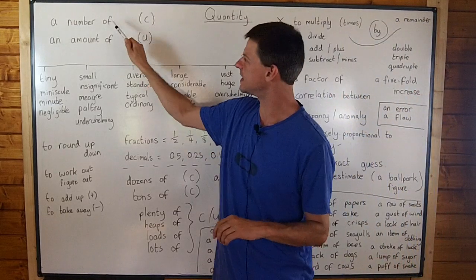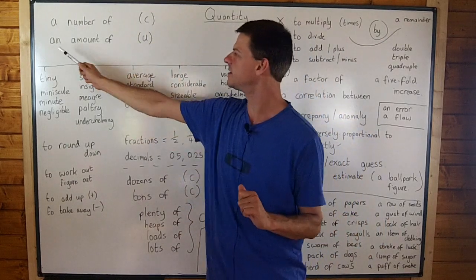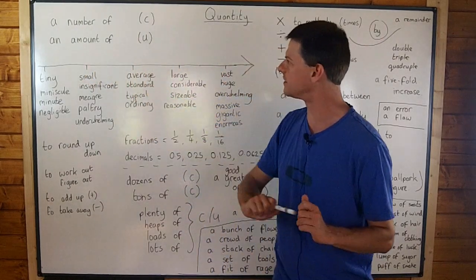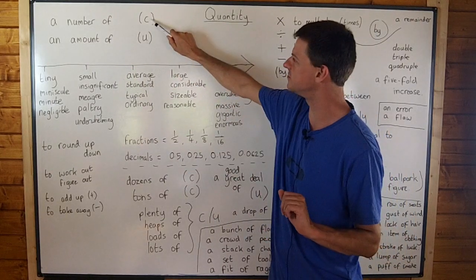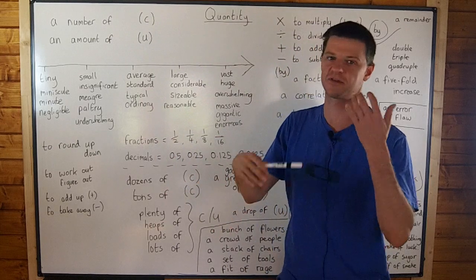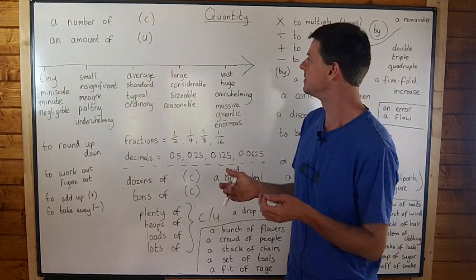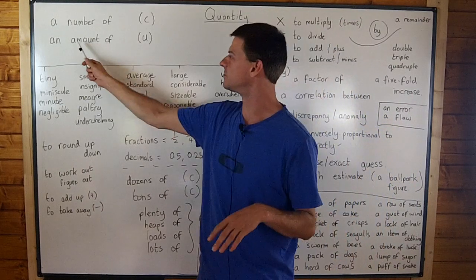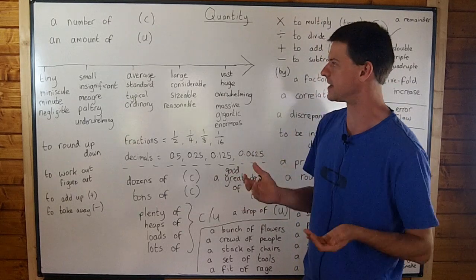We're dealing with quantity today, which I hope won't be too difficult. The first thing to take into account is that we can say a number of with countable nouns and an amount of with uncountable nouns. That's what the C means and the U means. Use this with countable nouns like apples, pears, sofas, carpets, and use amount of with uncountable nouns like work or time or money.